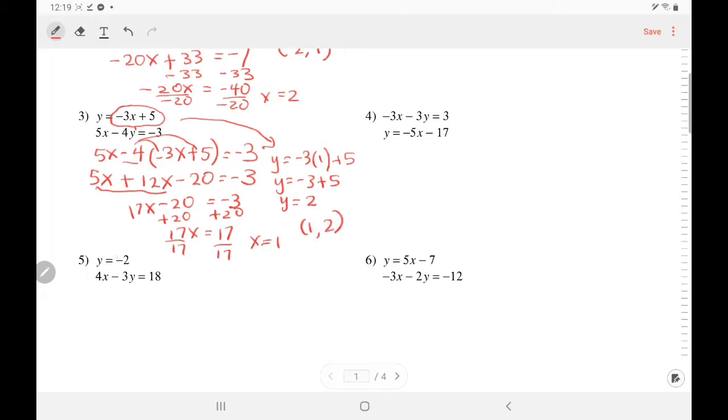And number 5, y is negative 2. Substitute that into y. So 4x minus 3. Substitute in your 2. Oh, it's a negative 2. Equals 18. So 4x negative 3 times negative 2 is positive 6 equals 18.